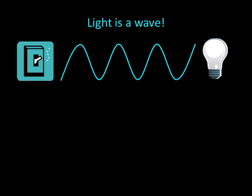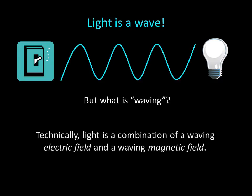Light is a wave, but it's not exactly like the waves we see in everyday life, like water waves or sound waves. With light, what exactly is waving? Technically, light is the combination of a waving electric field and a waving magnetic field.